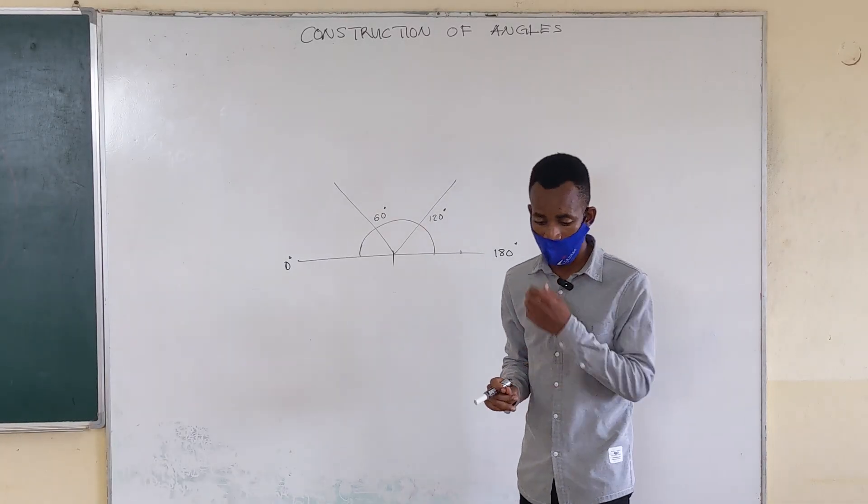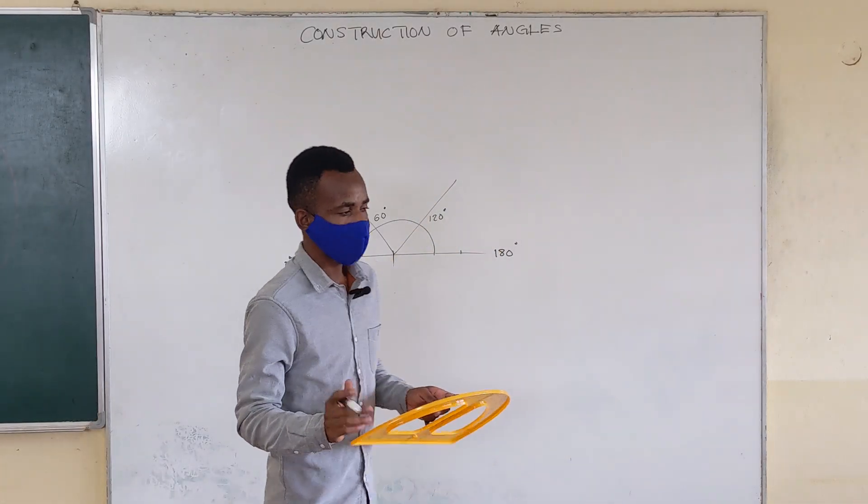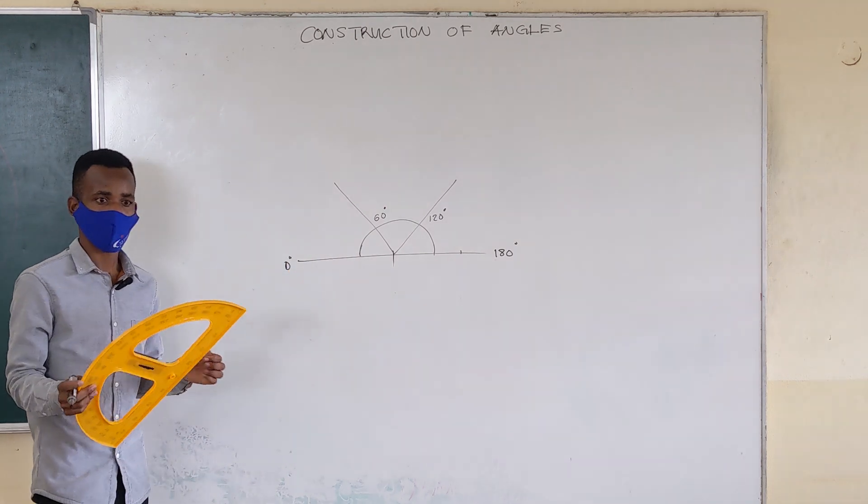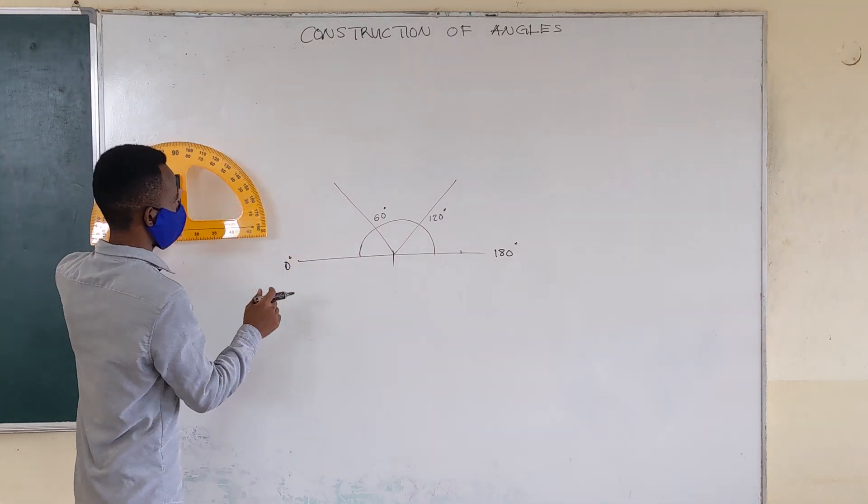So there is what we call an angle bisector. How do we bisect any given angle? You know what to bisect is, right? But how do we bisect a given angle?